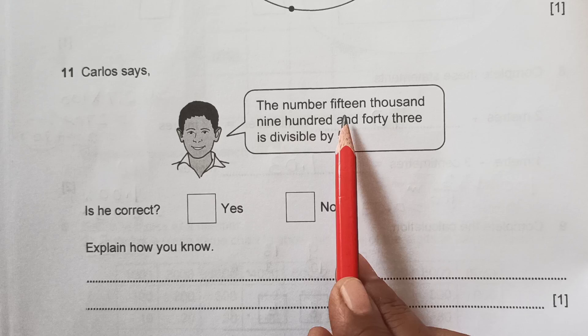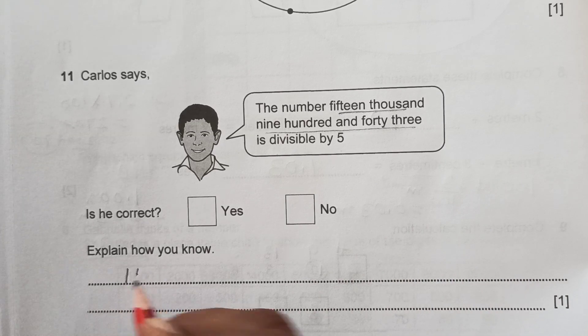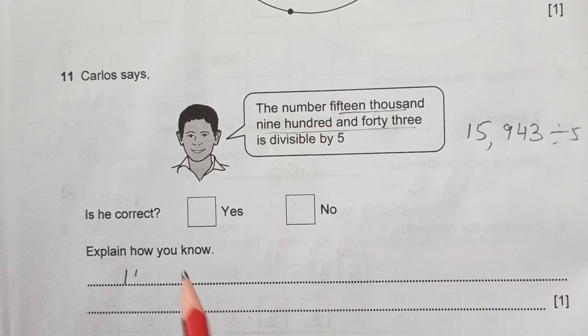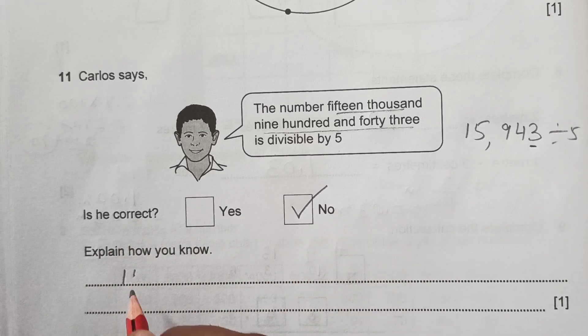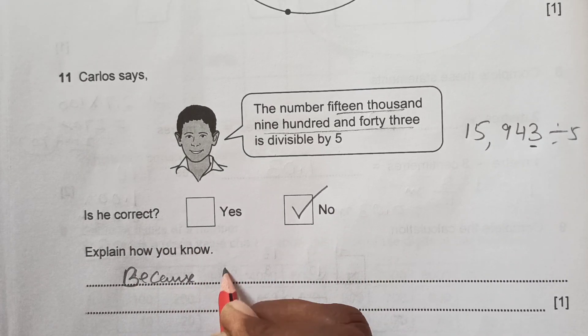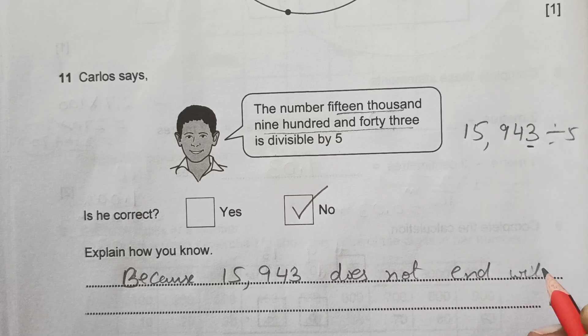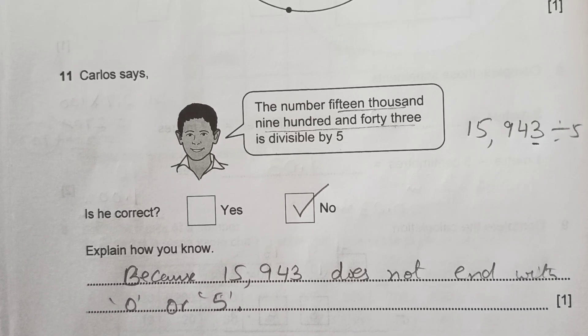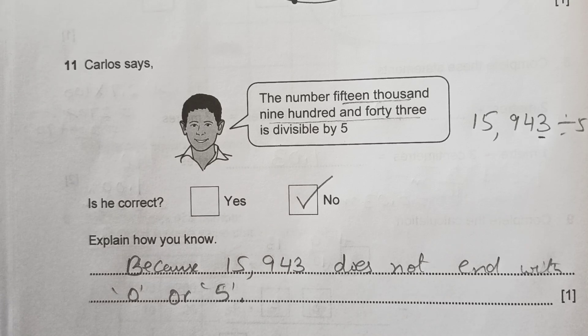Carlos says the number 15,943 is divisible by 5. This number is not divisible by 5 because it doesn't end with 0 or 5, so he is not correct. Is he correct? No. Why? Because number 15,943 does not end with 0 or 5, so it is not divisible by 5. That's it for this video. I will see you guys in the next video. Please like, share and subscribe with your friends, and also subscribe the channel. God bless you guys, see you in the next video.